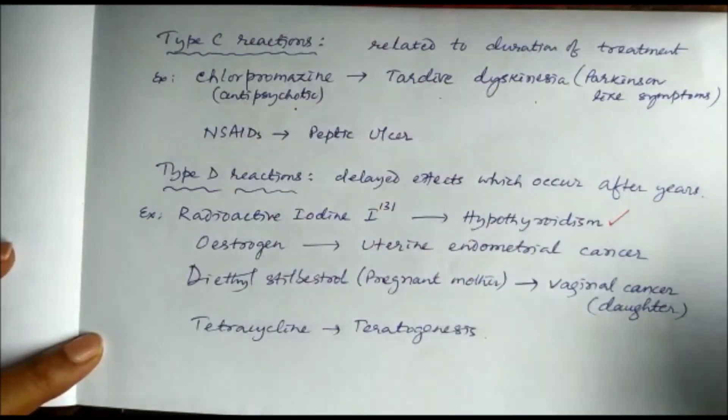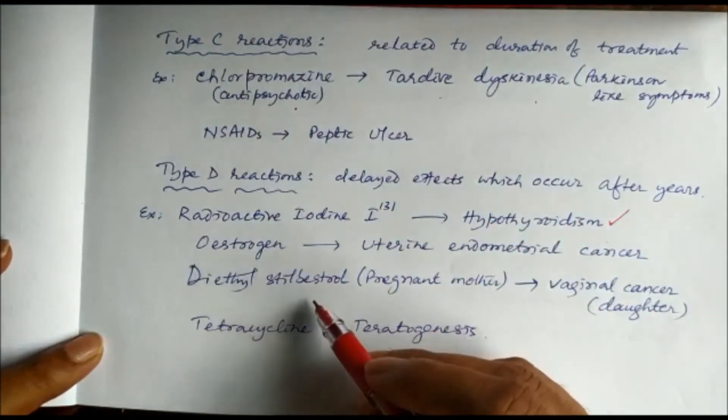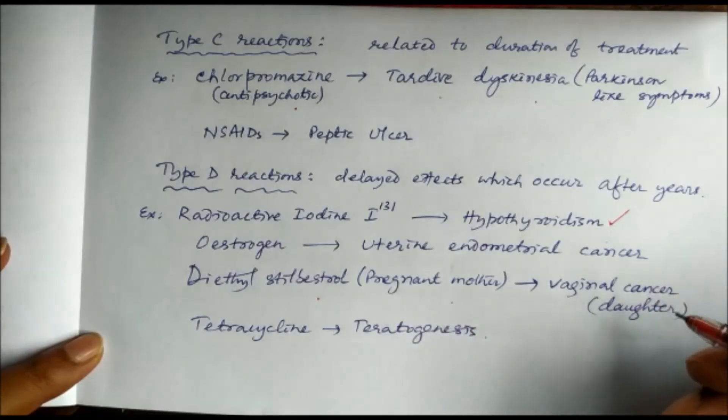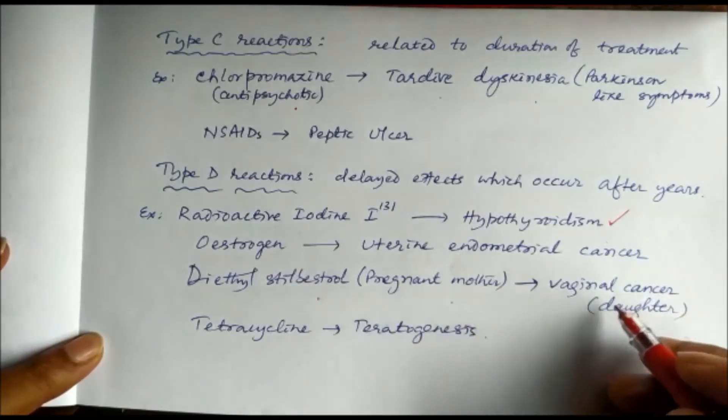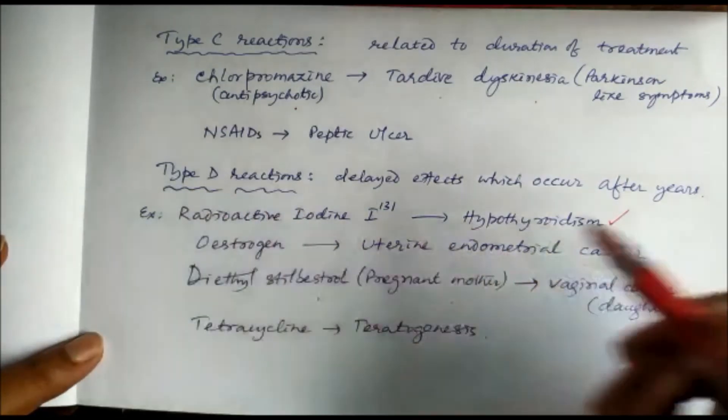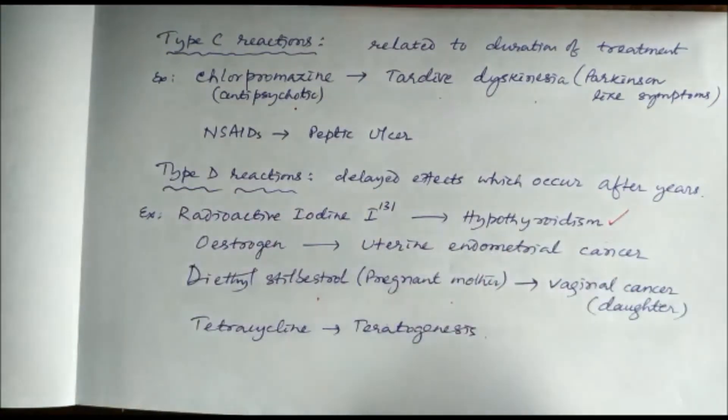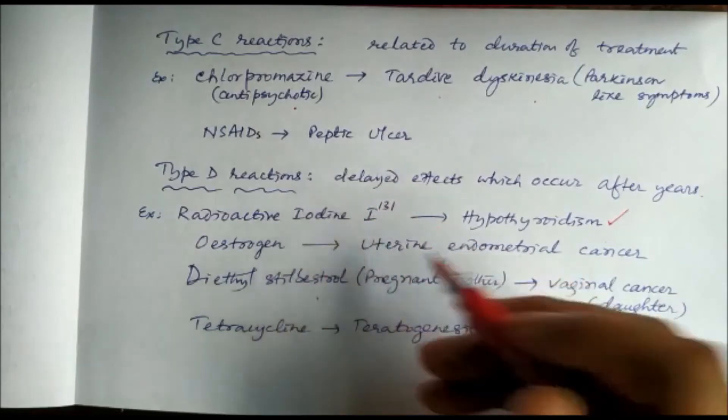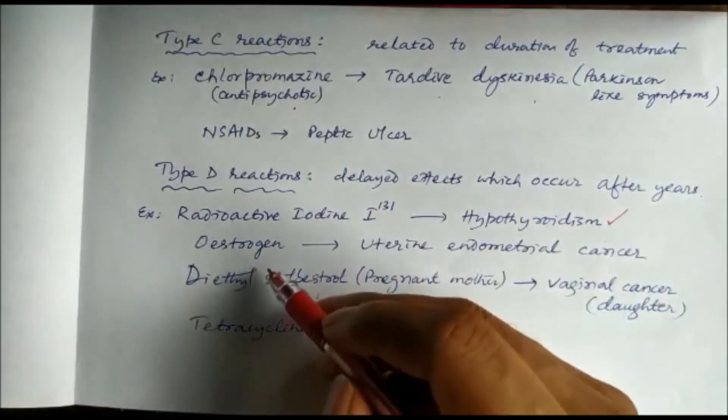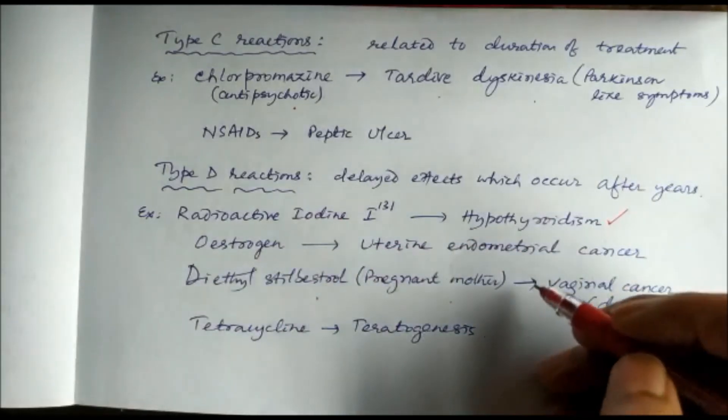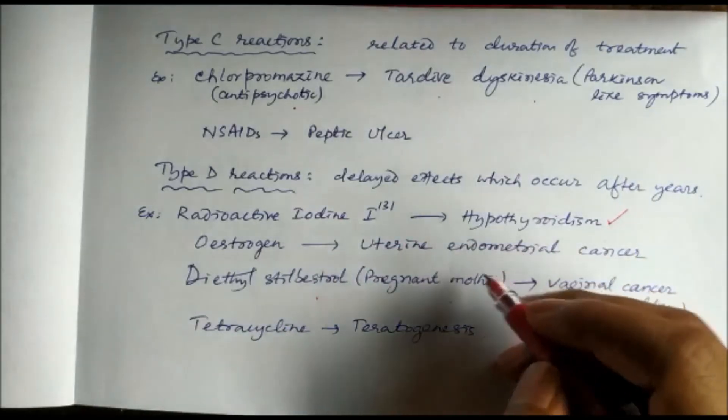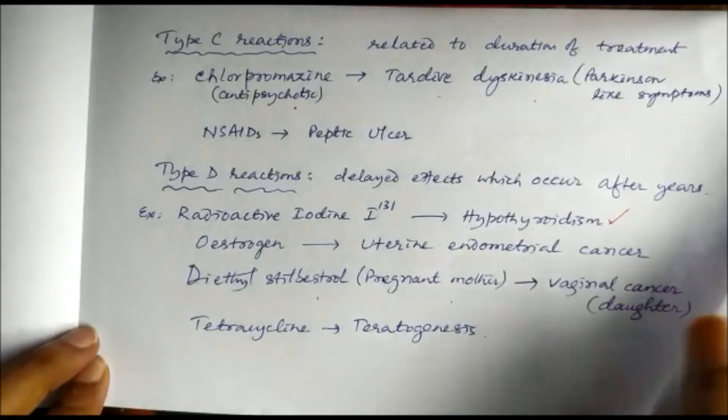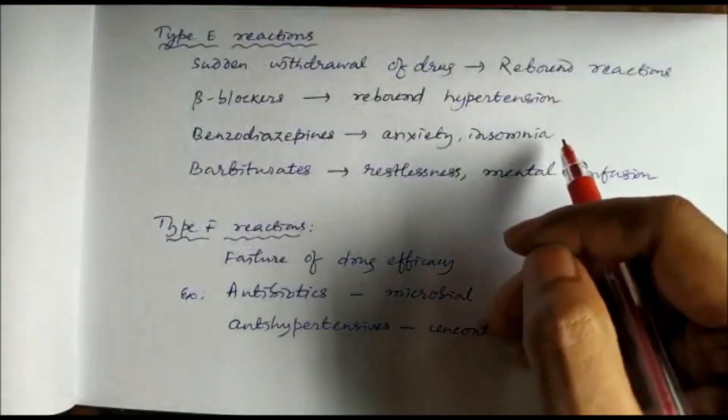Type D adverse drug reactions are delayed effects which occur after years. The classical example is diethylstilbestrol if taken by the pregnant mother with a girl child. The daughter, when she becomes adult, will suffer from vaginal cancer. This is a classical example of Type D adverse drug reactions. Other reactions can be radioactive iodine used against hyperthyroidism later causing hypothyroidism, estrogens and oral contraceptives after a long time causing uterine endometrial cancer, and tetracycline causing teratogenesis.